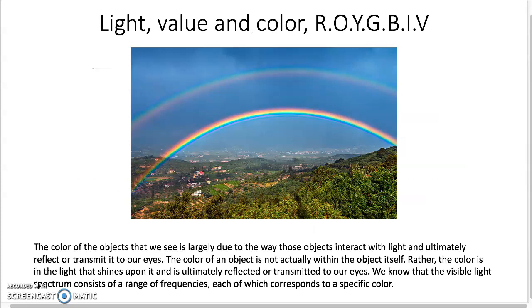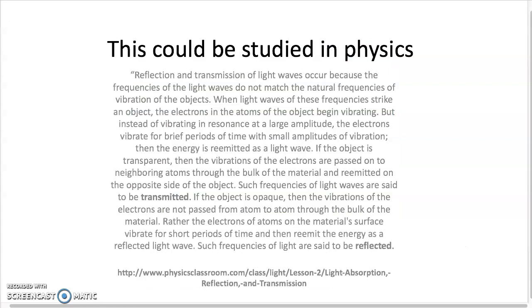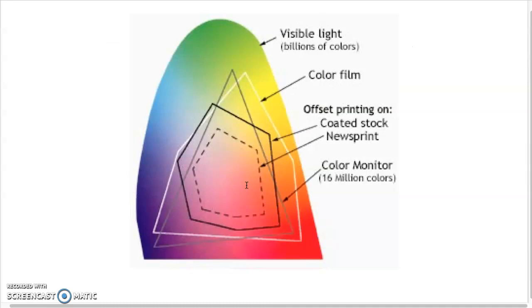The color of objects we see depends on the way they reflect light — objects change depending on the lighting. The color we see is the one reflected back, with every other color absorbed. Light itself actually has color, which can be refracted in a crystal or water. In the world of color, visible light contains billions of colors, then color film holds quite a lot, offset printing less so, and a color monitor is even smaller in its color range.